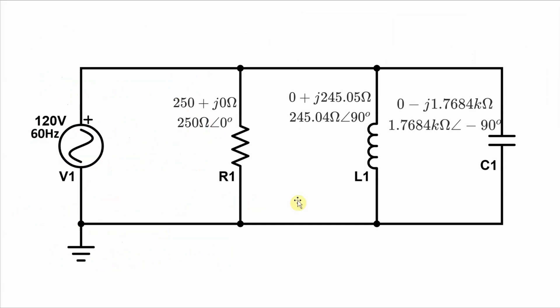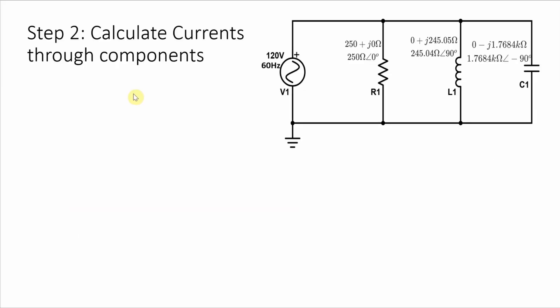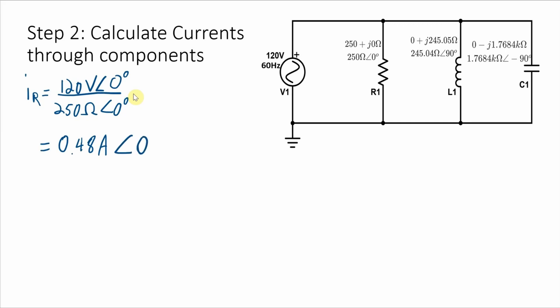I can put those numbers on the schematic in both rectangular notation and polar notation. Now I'm going to calculate the currents through each one of these components. Starting with the resistor — the current through the resistor is the voltage across it divided by its impedance. I divide the magnitudes to get 0.48 amps and add the phases to get zero degrees. I can also convert this into rectangular notation.